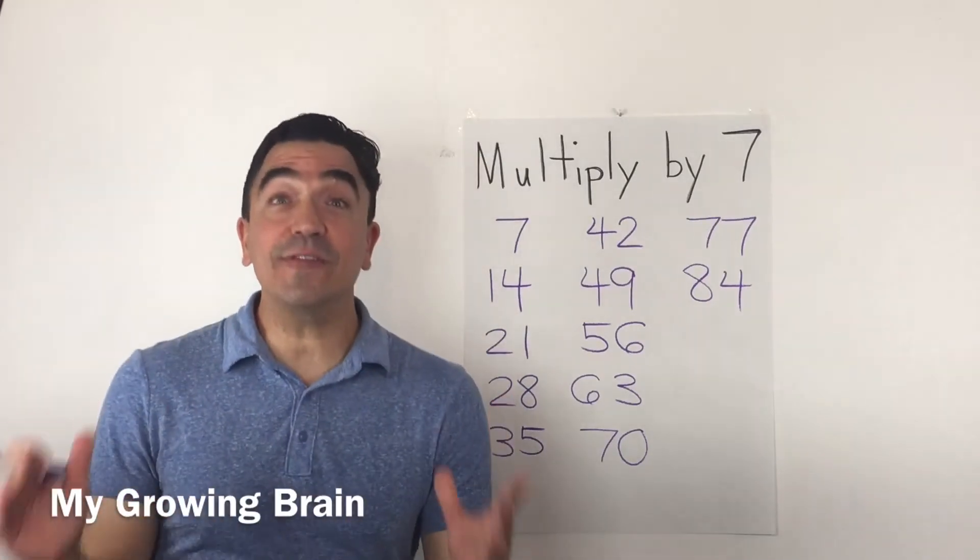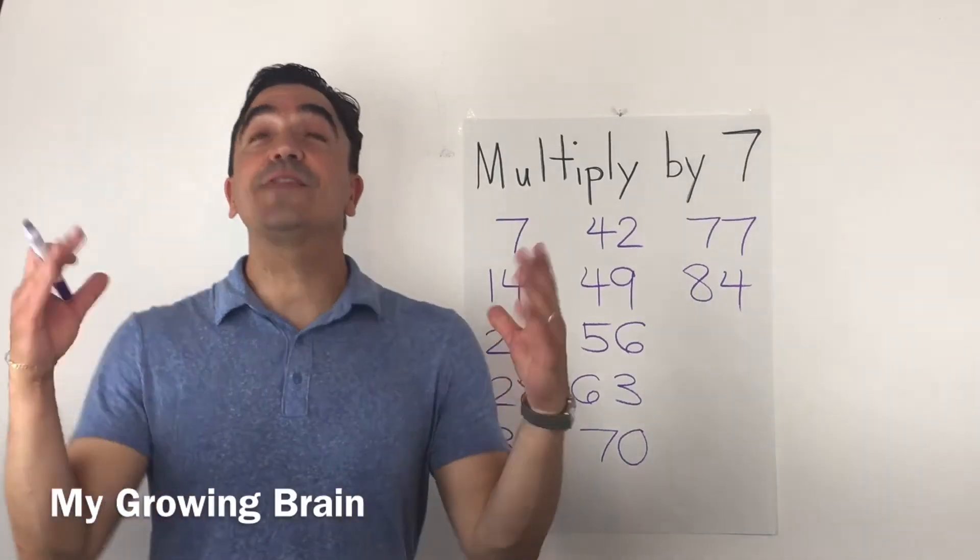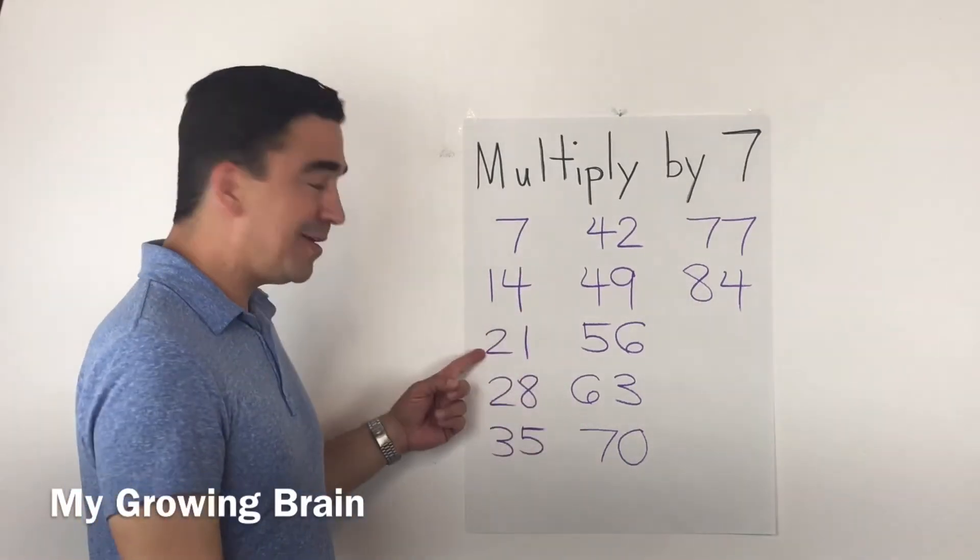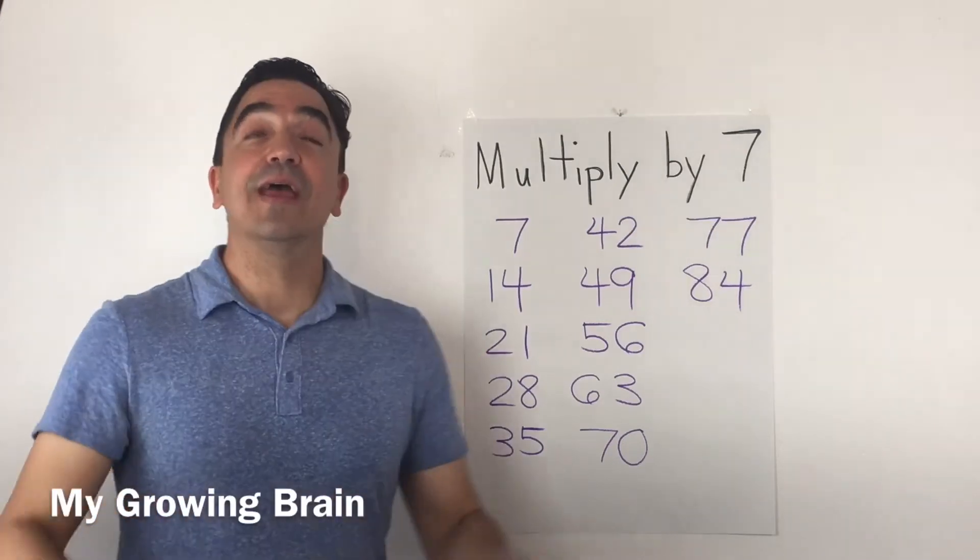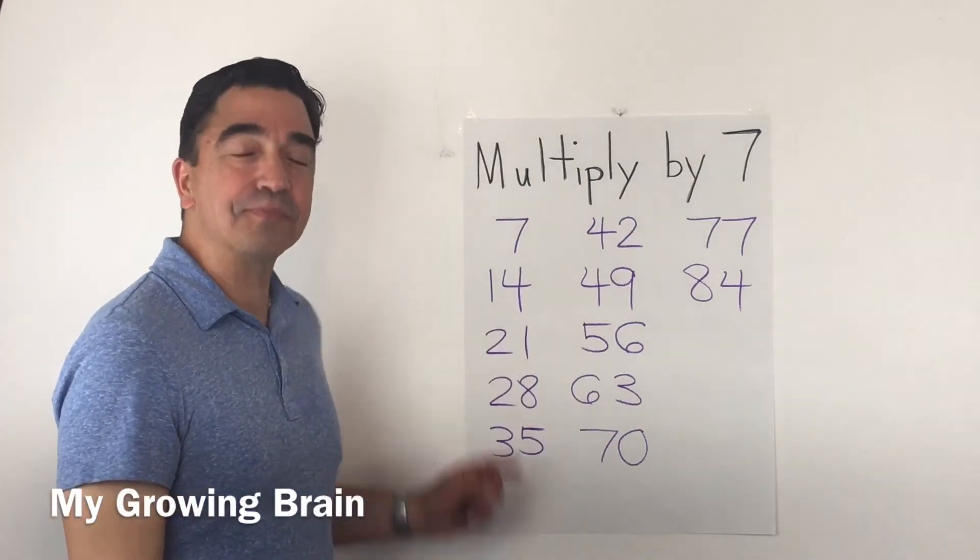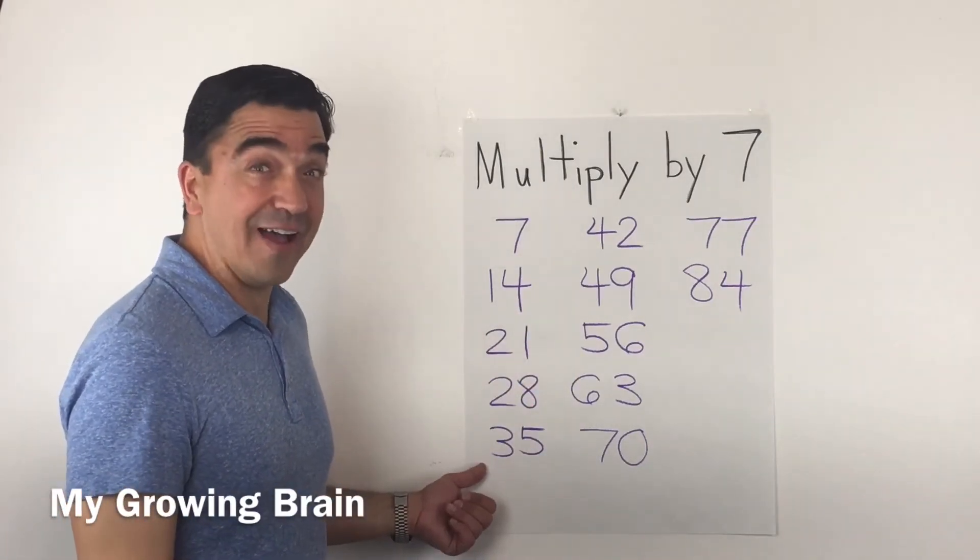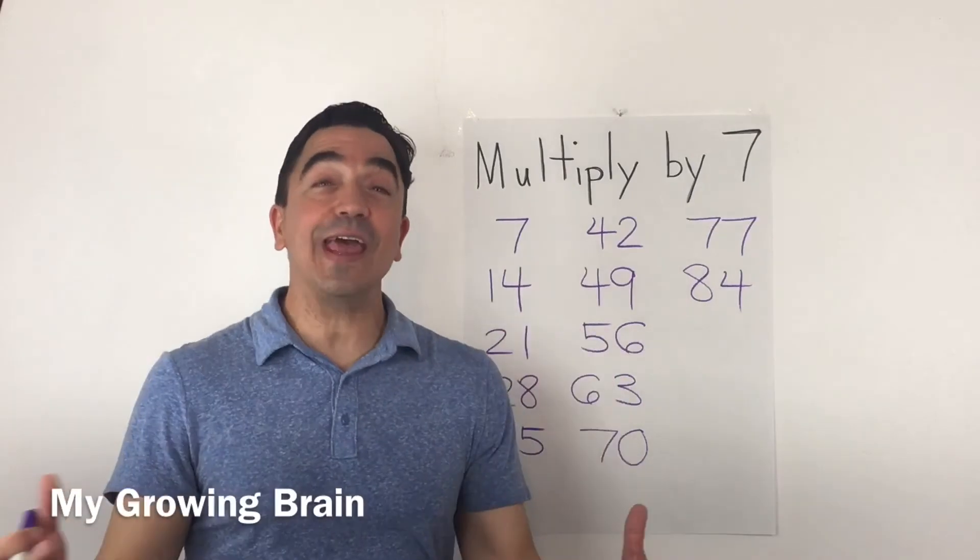Seven. Seven times two, fourteen. Seven times three, twenty-one. Seven times four, twenty-eight. Seven times five, thirty-five. Seven times six...